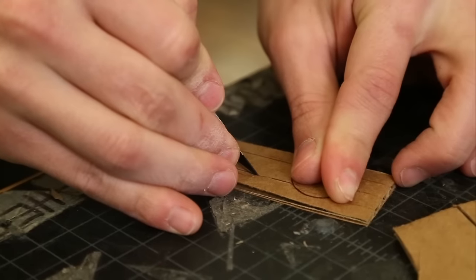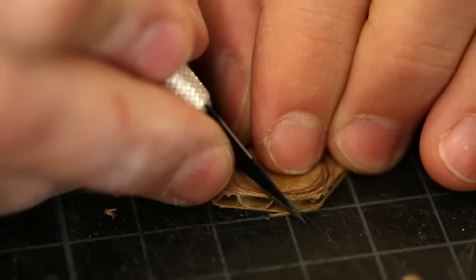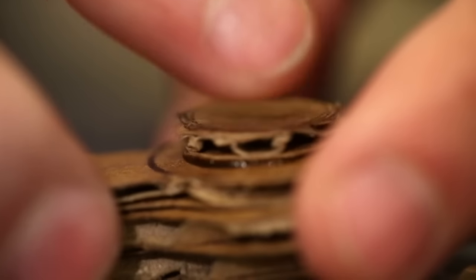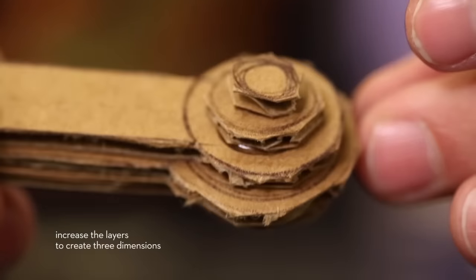The levered detail on the side of the toaster - and to achieve that in cardboard we basically cut a series of circles that got smaller as you went towards the outside and stack them up to build up the three dimensions.